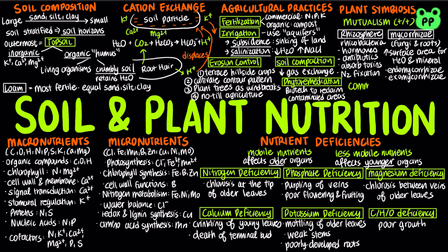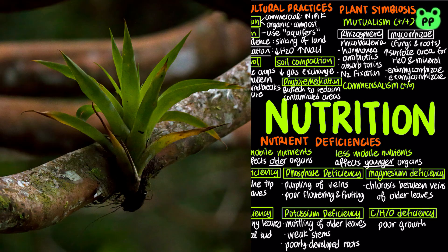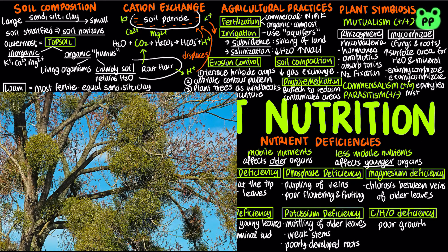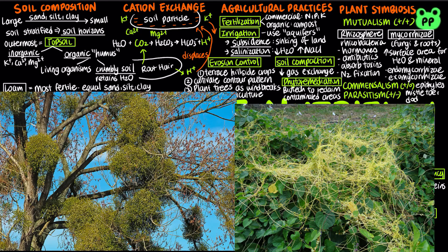Finally, some plants have nutritional adaptations that use other organisms in non-mutualistic ways. Epiphyte plants grow on another plant and obtain water and minerals from rain — a commensal relationship that neither harms nor benefits the host plant. Parasitic plants, on the other hand, absorb sugars and minerals from their living host plants. Examples include mistletoe, which is a photosynthetic parasite, and dodder, which is a non-photosynthetic parasite.